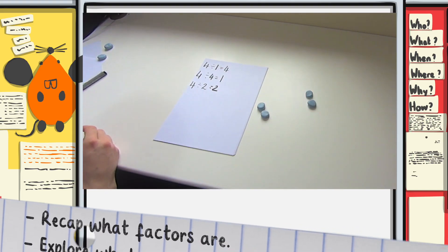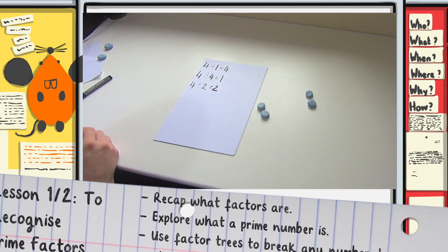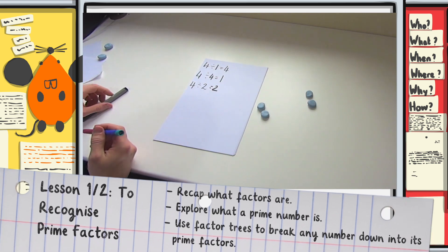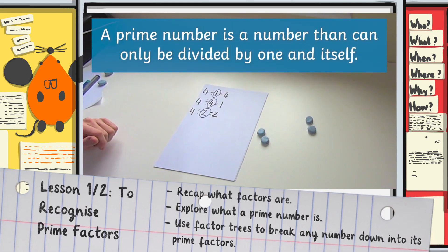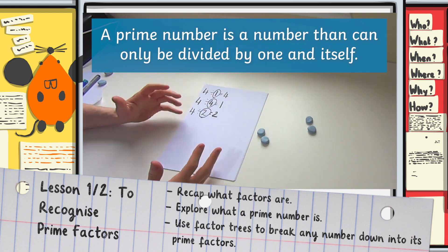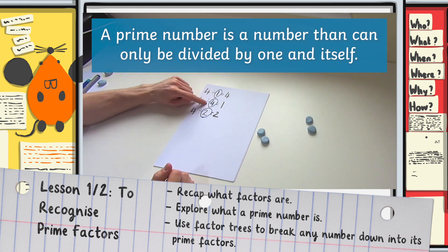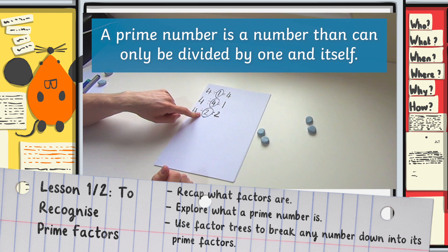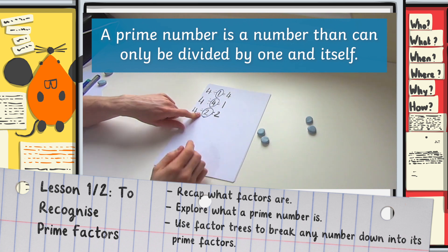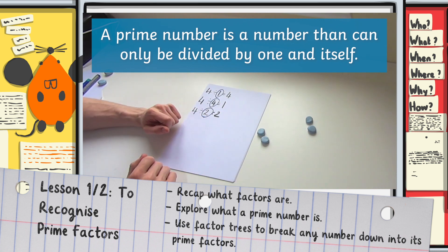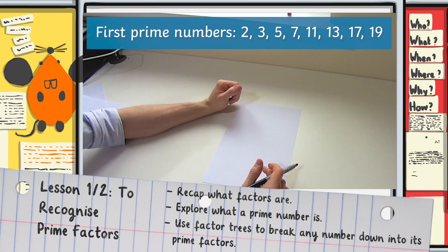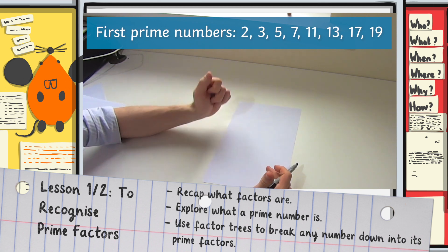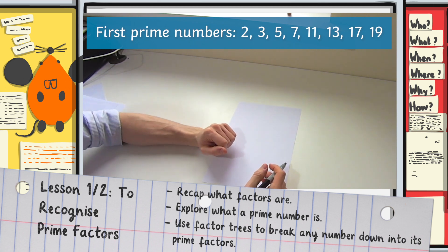Now all of these numbers that I've just divided the number four by are factors of four. A prime number is a number that can only be divided by one and itself. But this number can also be divided by two, so therefore number four is not a prime number. Prime factors are just prime numbers that are also factors.